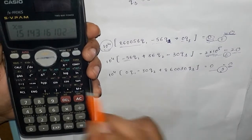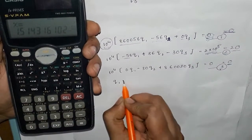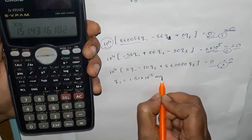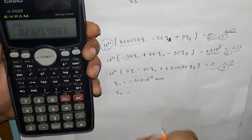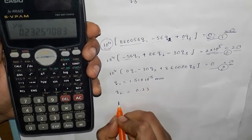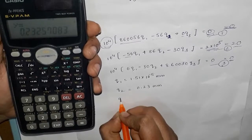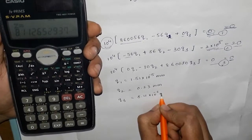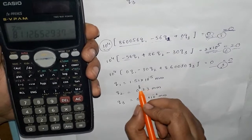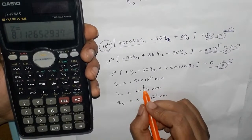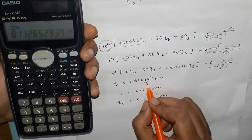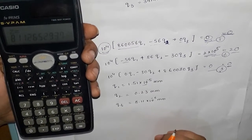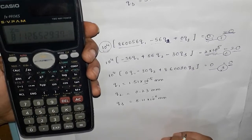The answer: q₁ value is 1.51×10⁻⁵ mm, q₂ value is 0.23 mm, and q₃ is 8.11×10⁻⁶ mm. The negative sign in deformation shows the direction difference. So this is how we solve 2 equations and 3 equations using a calculator. If you like this video, please like, share, and subscribe.